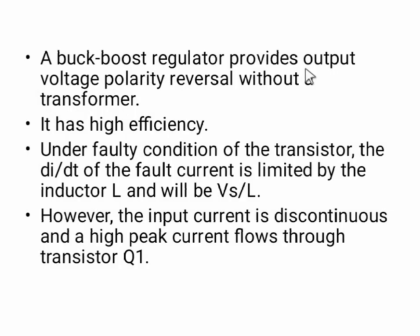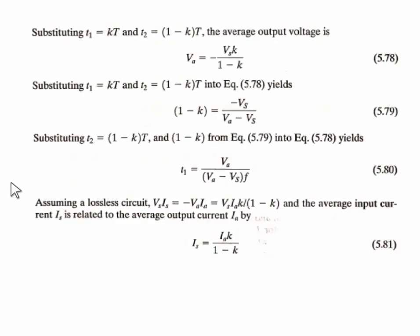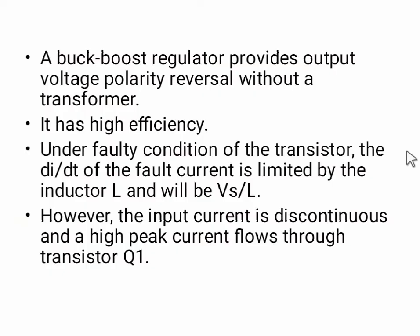The buck-boost regulator provides output voltage polarity reversal without a transformer, with output Va = -Vs·K/(1-K). It has high efficiency. Under faulty conditions of the transistor, the di/dt of fault current is limited by the inductor L and equals Vs/L. Compared to the buck and boost converters, the buck-boost converter limits fault current.